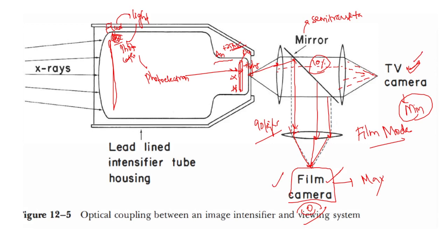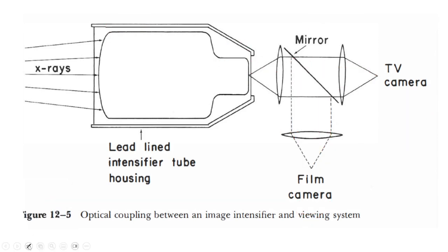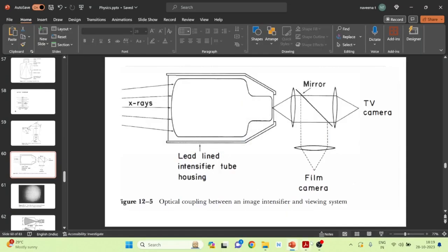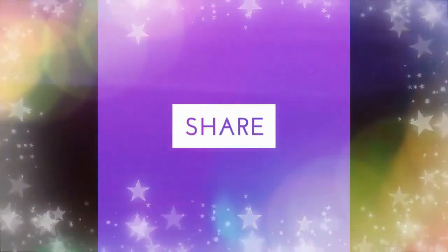In some modern systems, a fiber optic bundle is used. The light from the output phosphor is directly converted via fiber optics and sent as TV signals to the TV camera. This concludes the overview of the main important points about the fluoroscope image intensifier design.